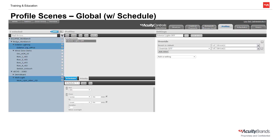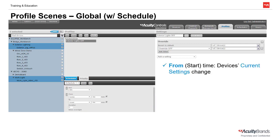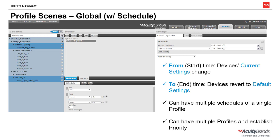If instead of being run on demand from a scene controller, we wish for our profile to run on a time schedule, we would need to create that schedule back in the Profiles tab. Basically, the schedule sets up a start and an end time. While this profile is running, the devices selected will exhibit the behavior of the profile, and when the profile schedule ends, devices will revert to their programmed default settings. Note that a profile can be run on multiple schedules, and we can have multiple profiles that can have higher or lower priority than others. Scheduling techniques and priority will be covered in a separate tutorial.